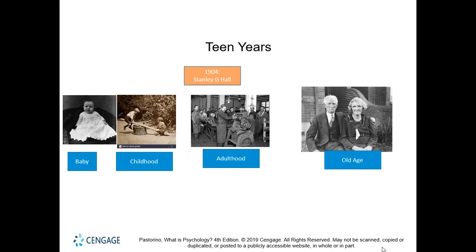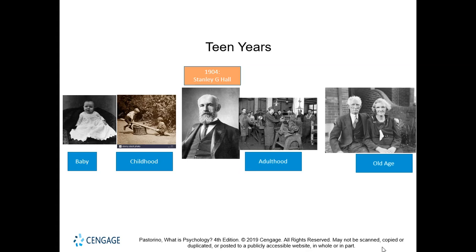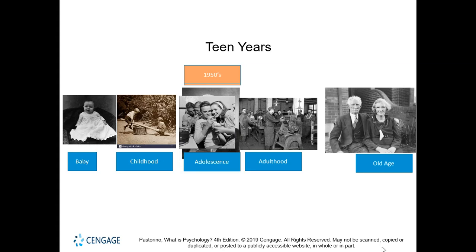It is right around the same time that Stanley G. Hall is doing studies on childhood. One of the things he starts to notice is that there is, in fact, another stage called adolescence — between childhood and adulthood. It's not really until around the 1950s that culture catches up with research, and we start to accept that teenagers are their own stage. We give teenagers time to grow up; we don't throw them out into the world right away. In fact, we keep them in schools for long periods of time so that they can learn how to be adults and interact with other teenagers.